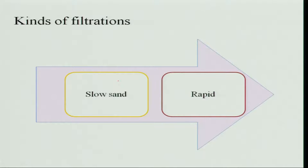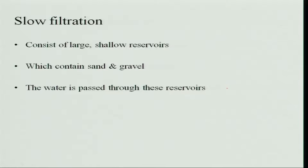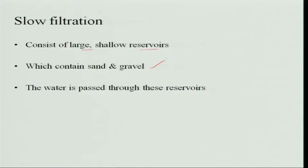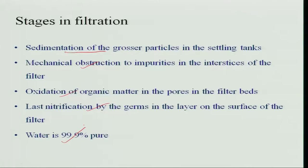There are two kinds of filtration: slow sand filtration and rapid sand filtration. Slow sand filtration consists of large shallow reservoirs containing layers of sand and gravel through which water is passed. This causes sedimentation of coarser particles in settling tanks, mechanical obstruction of impurities, oxidation of organic matter in the filter bed, and nitrification by germs in the filter layers. With this method, water becomes 99.9 percent free of bacteria.